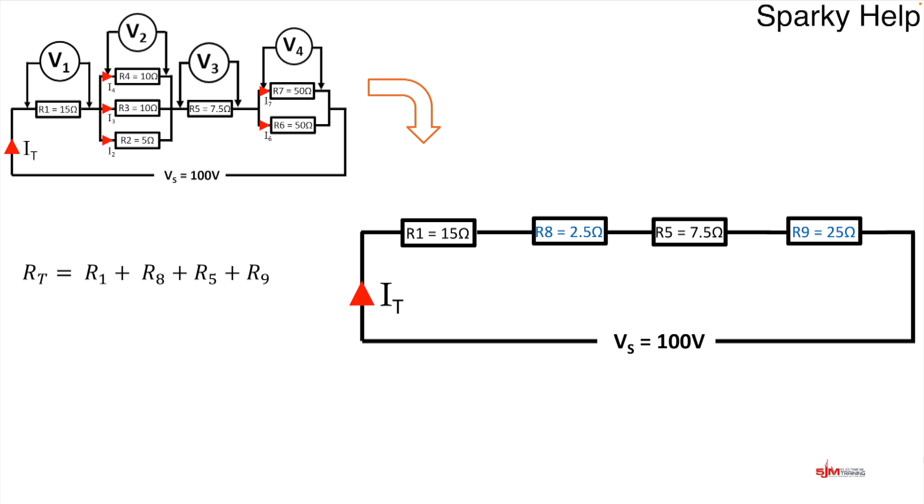We now got a more simplistic series circuit and we can now calculate RT. RT is based on the value of all of those added up. In this case it's R1 plus R8 plus R5 plus R9. And remember we've named them R8 and R9 to replace those parallel sections. If we put the answers in to a simple calculation we get a total value of 50 ohms. This could be redrawn again as one final resistor. RT is 50 ohms.